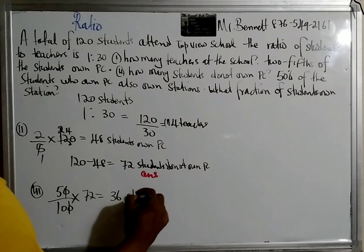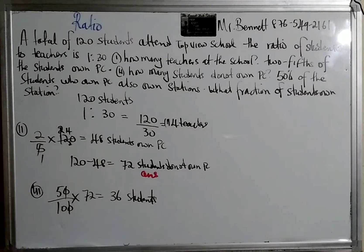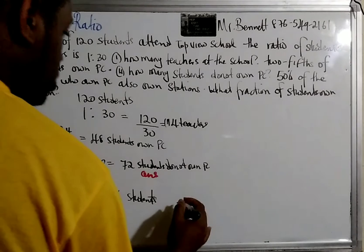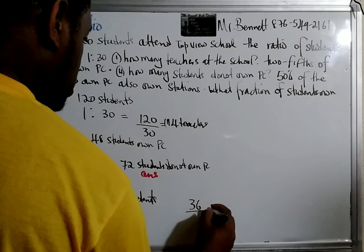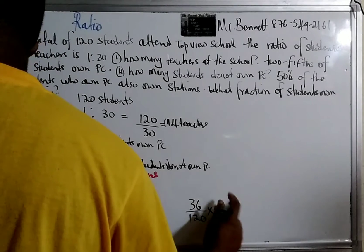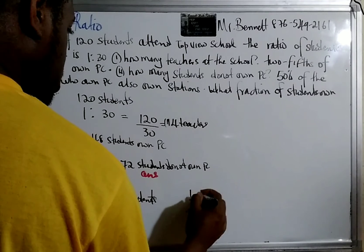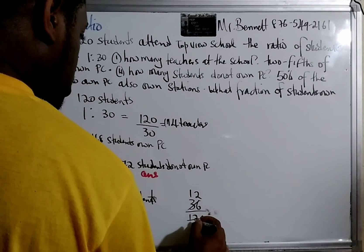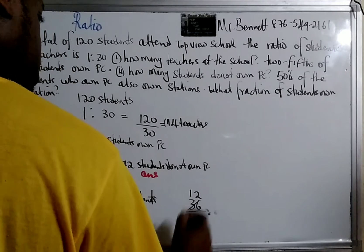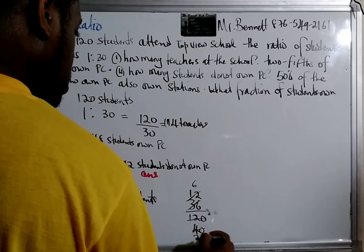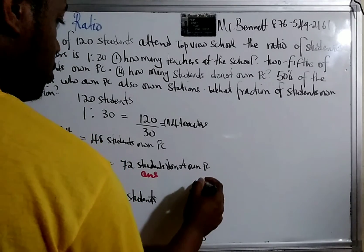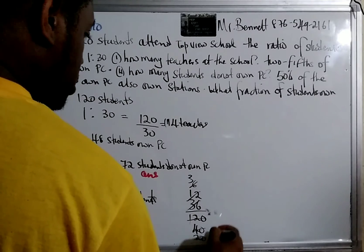So that's 36 students, but that's not the answer. They asked us to find what fraction of students own the station. So that would be a total of 36 over 120. So we can divide by three. Three into this goes one, that goes two, three into this goes up 40. We can reduce it to six over 20, and then we reduce it by two. So that's three over ten.